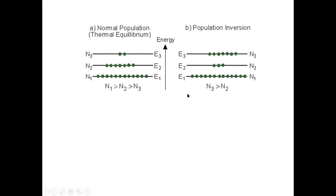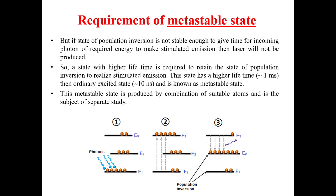In the population inversion state, we have at least two energy states in which the number of electrons in the higher energy state is greater than in the lower energy state. However, this is not the whole story. Although we have attained a higher number of electrons in the higher energy state, they may not stay there for long. Electrons in a higher energy state can stay there for only about 10 nanoseconds, so if population inversion is not stable enough for incoming photons to cause stimulated emission, laser will not be produced.